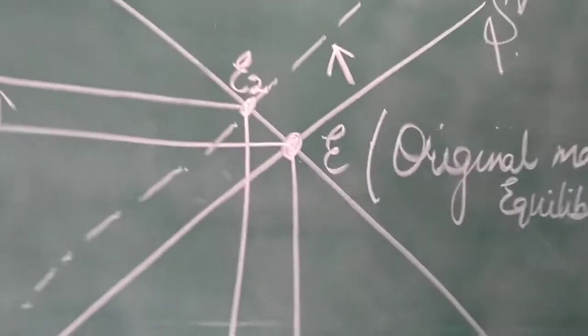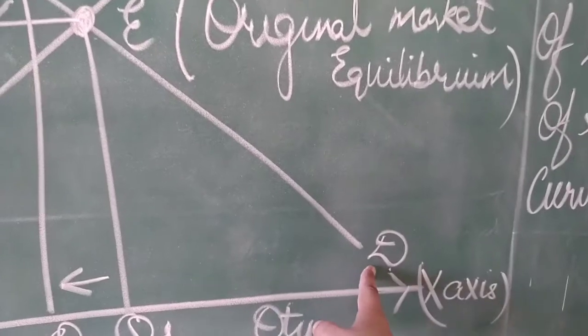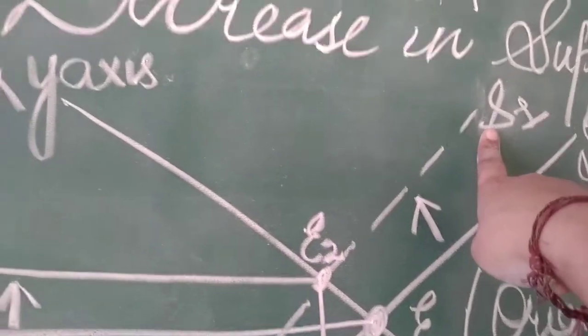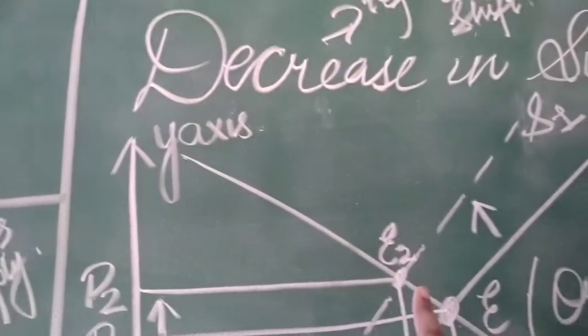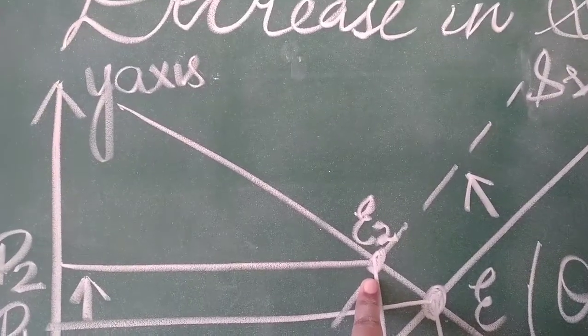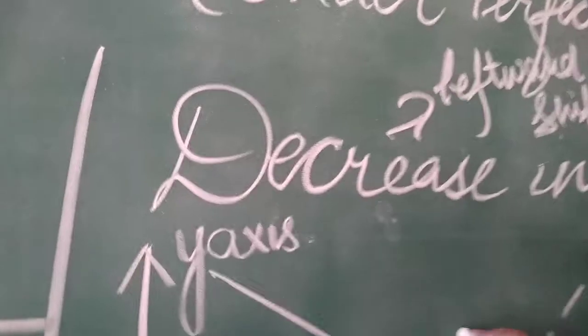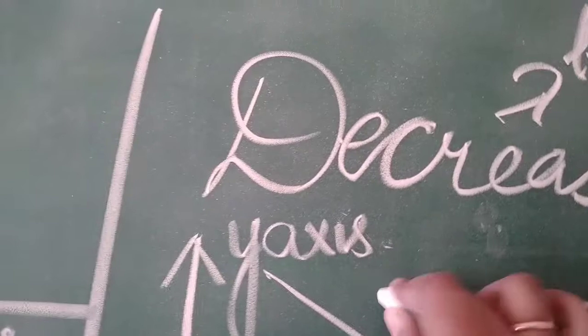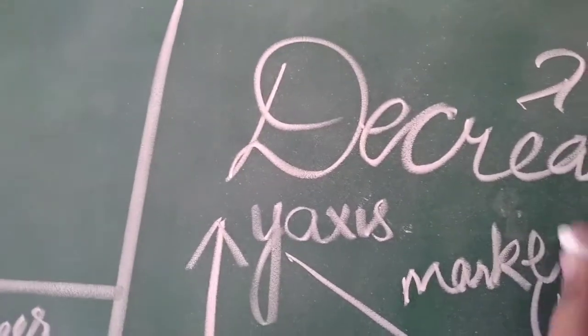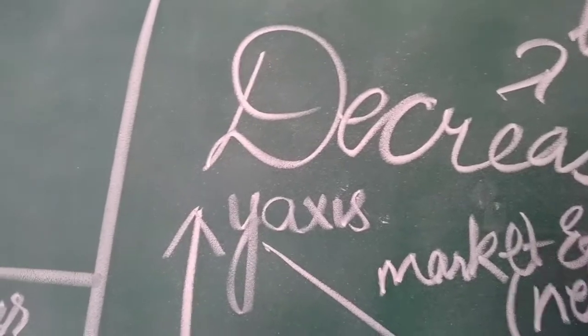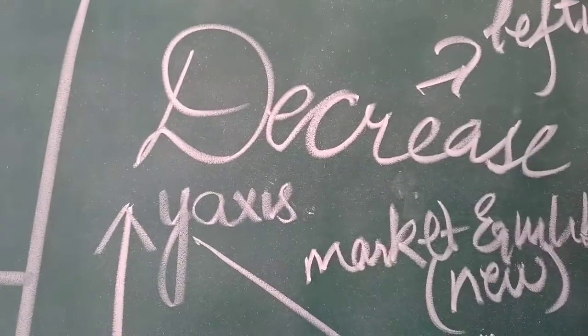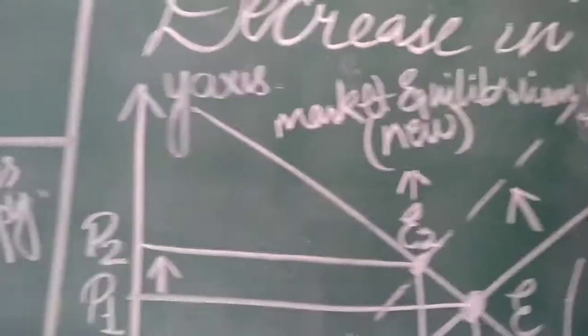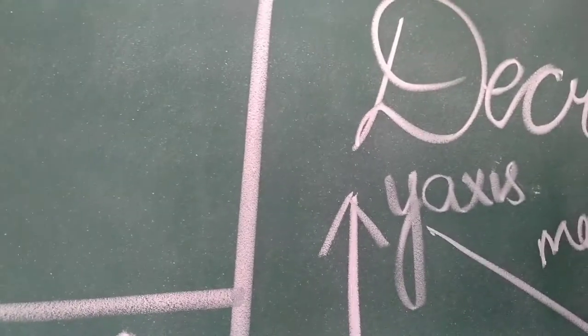Demand intersects with original supply curve and forms original market equilibrium. Now it has influence, now it will change. Because the intersecting point of demand curve constant and supply curve new one - decreased one - will going to intersect at one point. And that will mark you with E2. And this is new equilibrium. This is new market equilibrium.